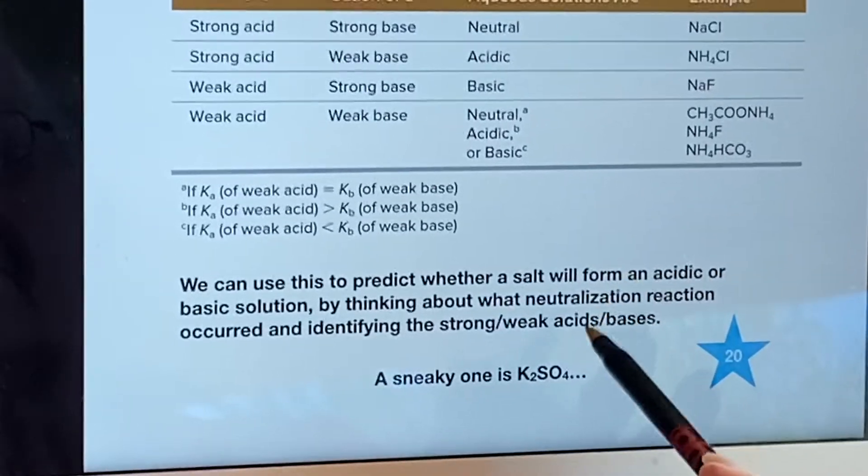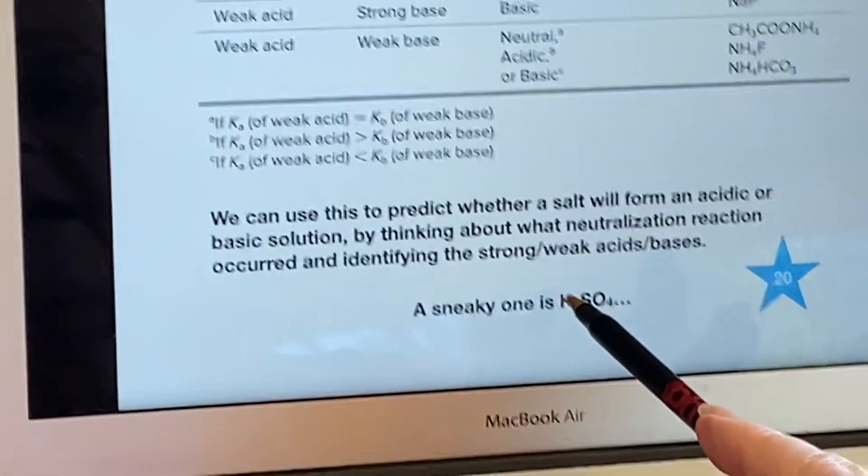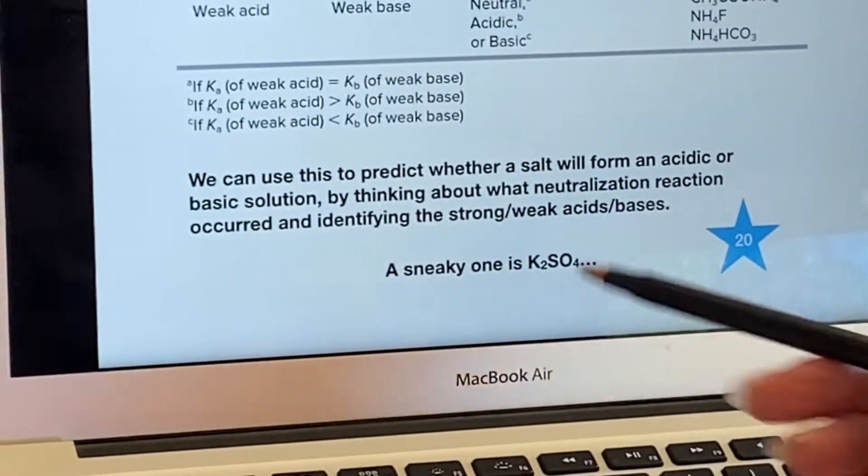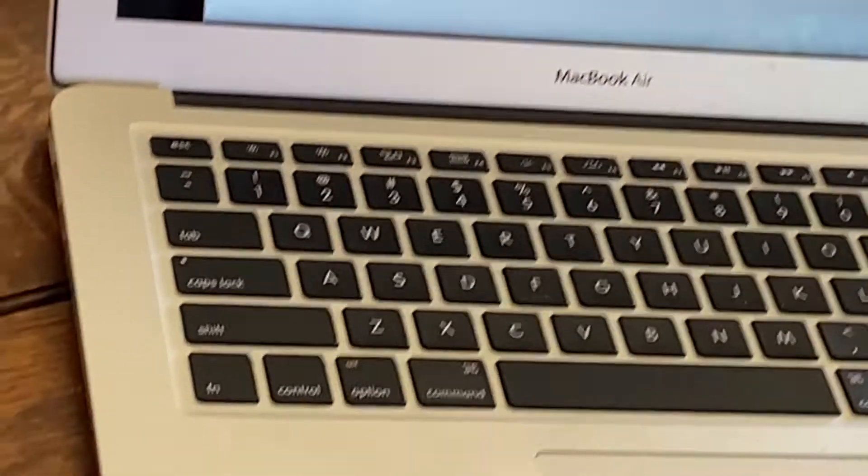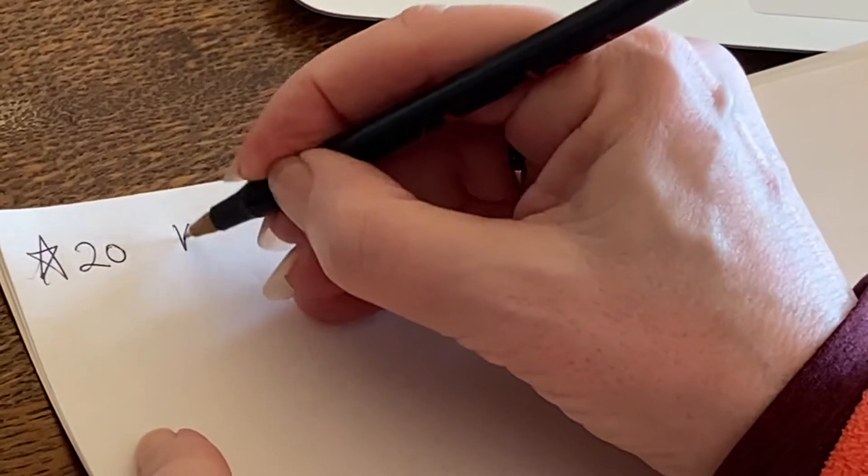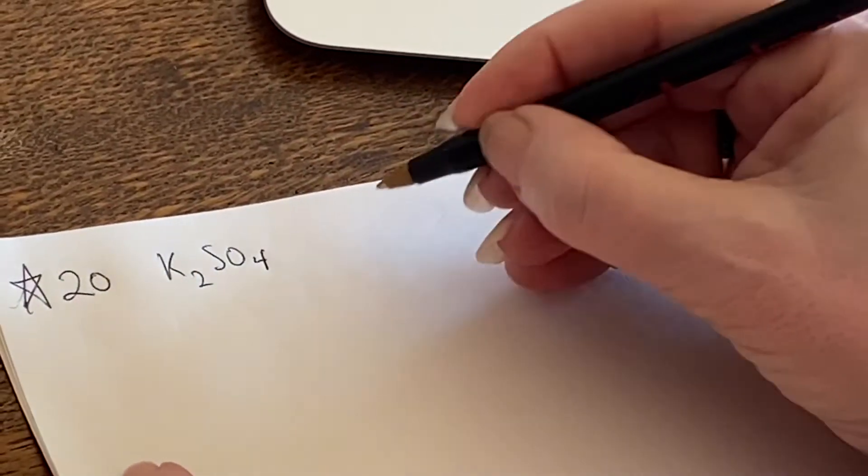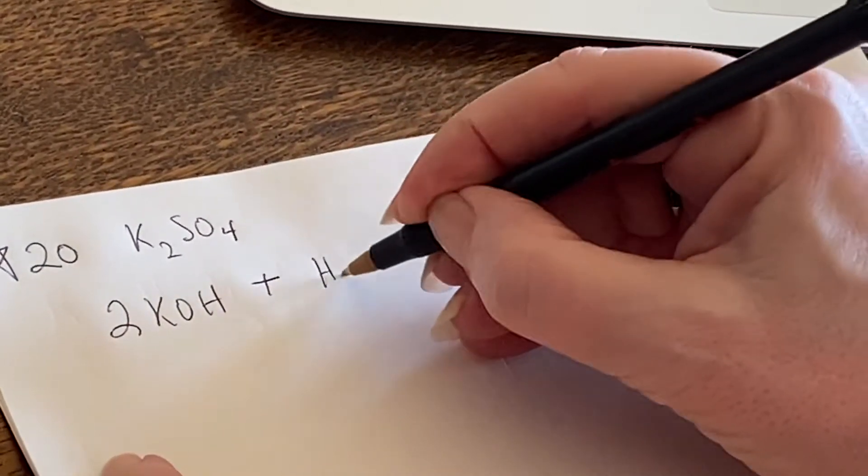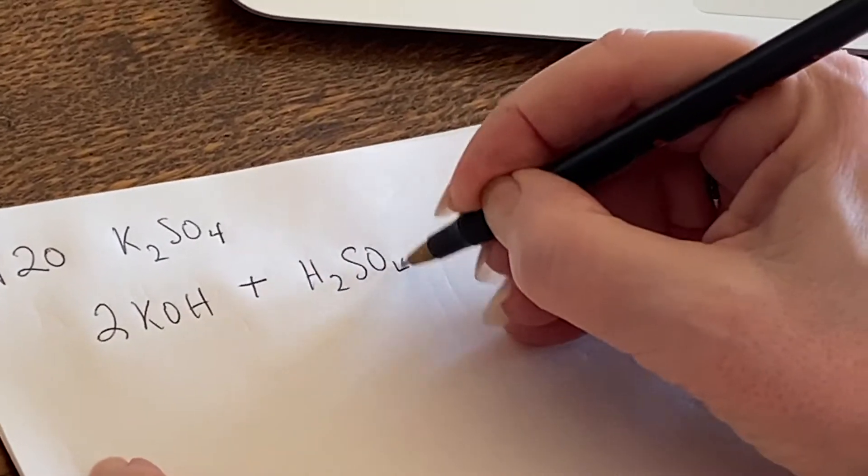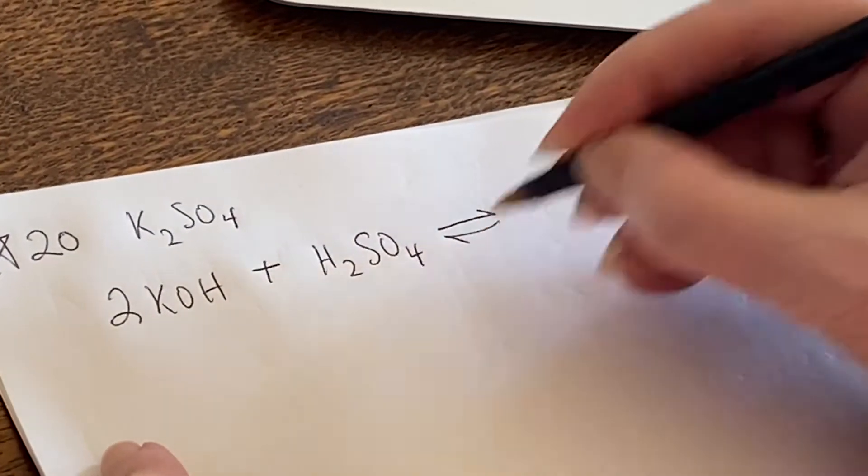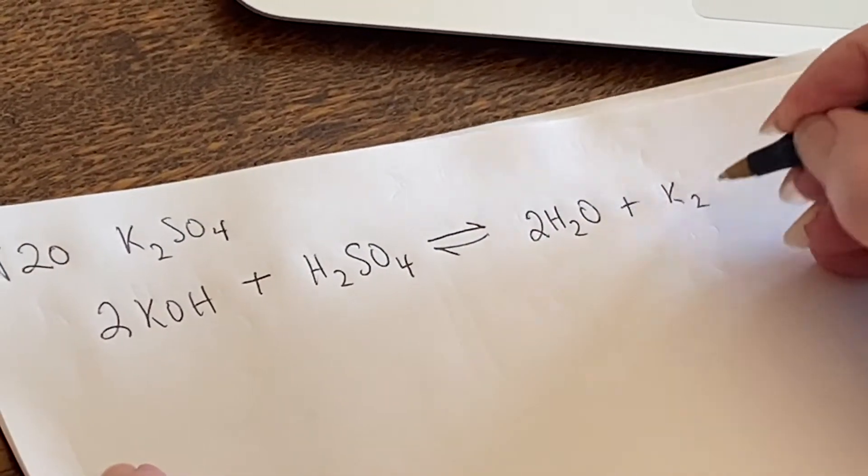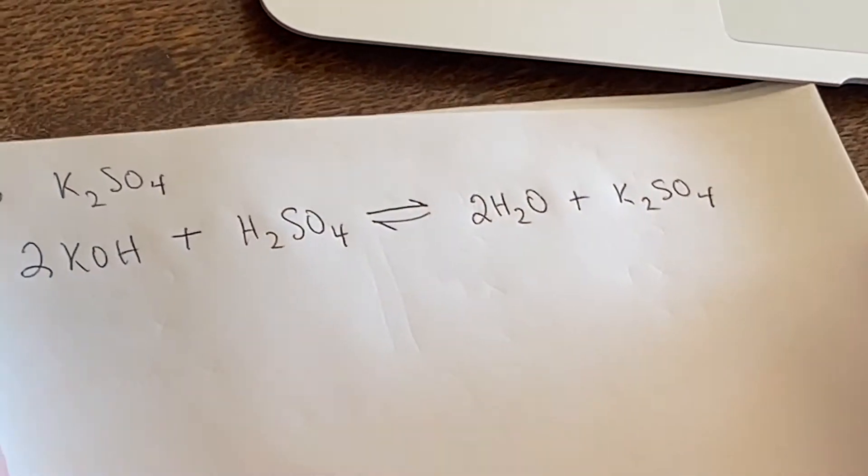However, here is a sneaky one. K2SO4, potassium sulfate. Why is that sneaky? Let's think about it for a minute. Star 20. I look at it and I say K2SO4. How do I make that? I'm going to take two KOHs and I'm going to combine it with H2SO4. I should end up with two waters out of that and the K2SO4. That looks like it should be perfectly fine.